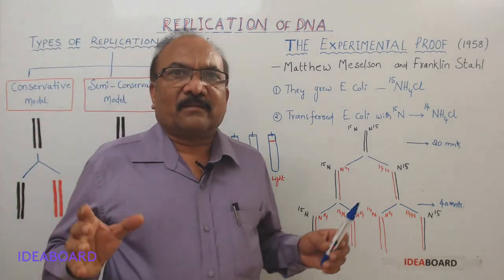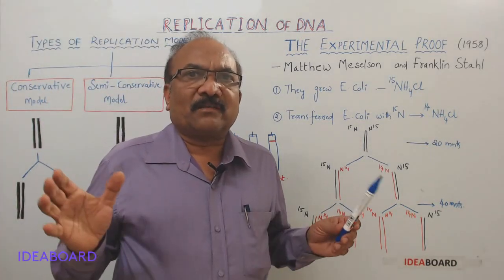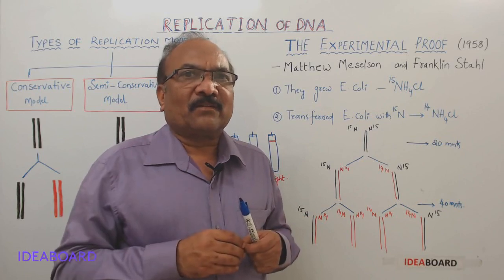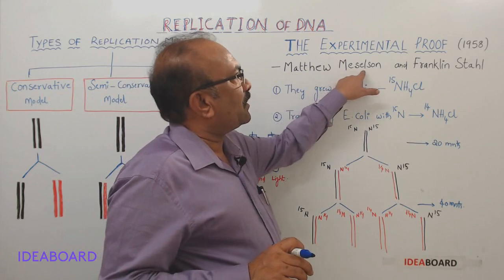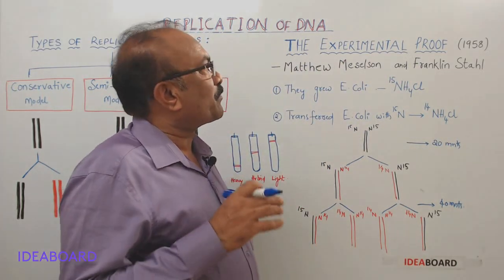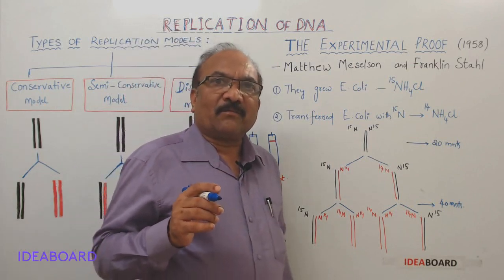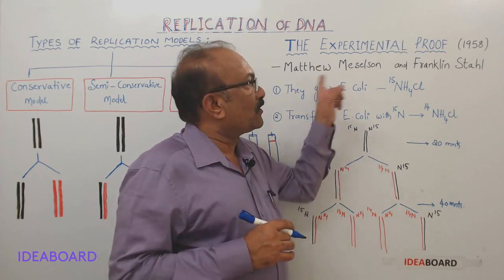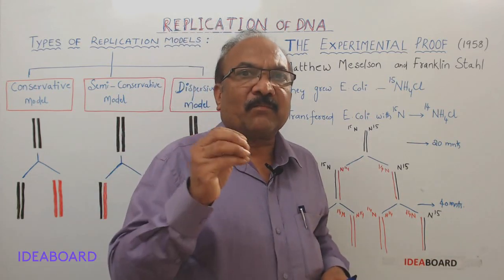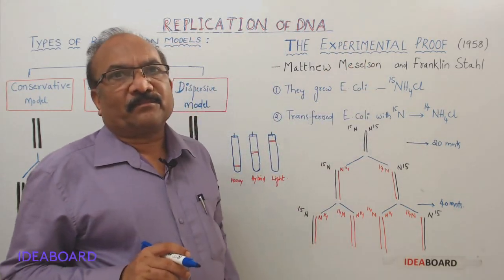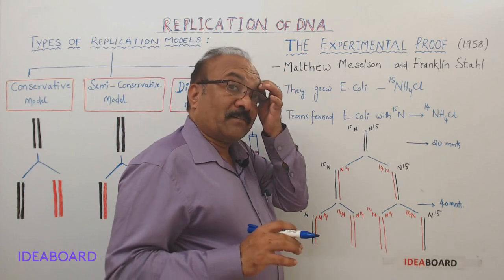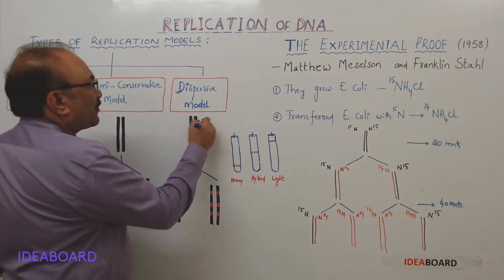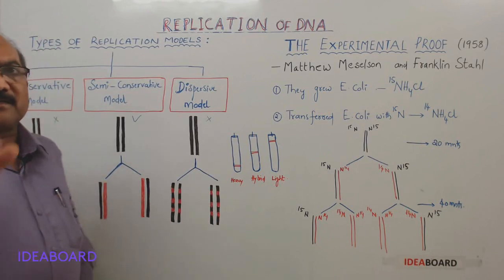Now the task is: among these three models, which one is the correct model? To prove this, two scientists — Matthew Meselson and Franklin Stahl — performed an experiment. This is popularly known as the most beautiful experiment in biology. They proved that it is not conservative and not dispersive — it is semi-conservative. Let us see how they proved it.